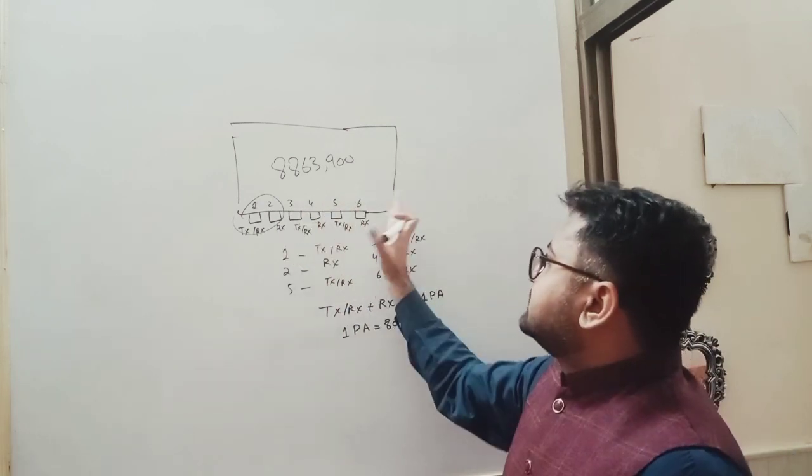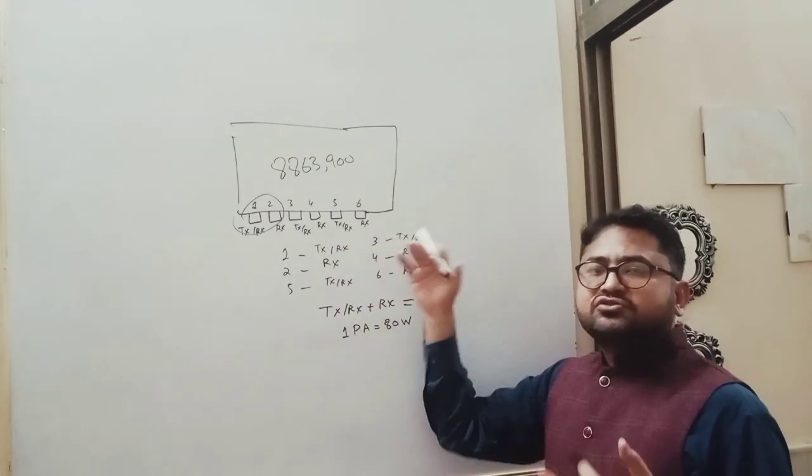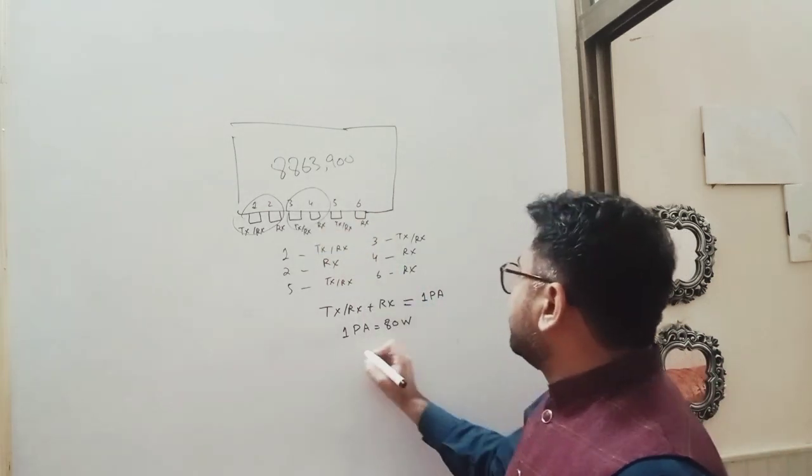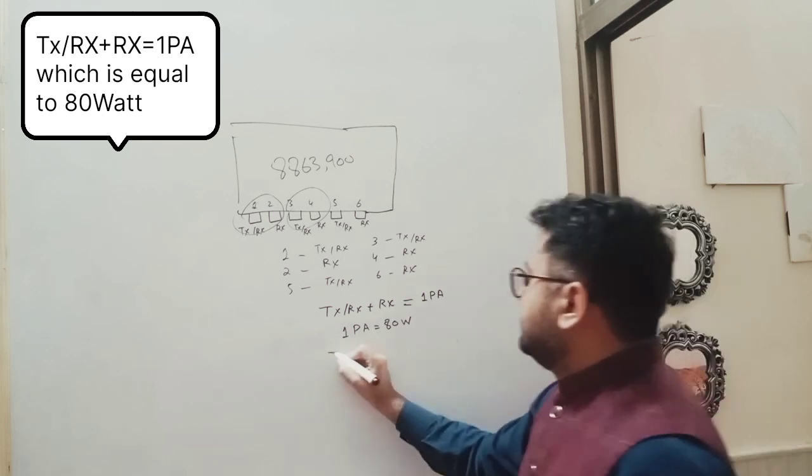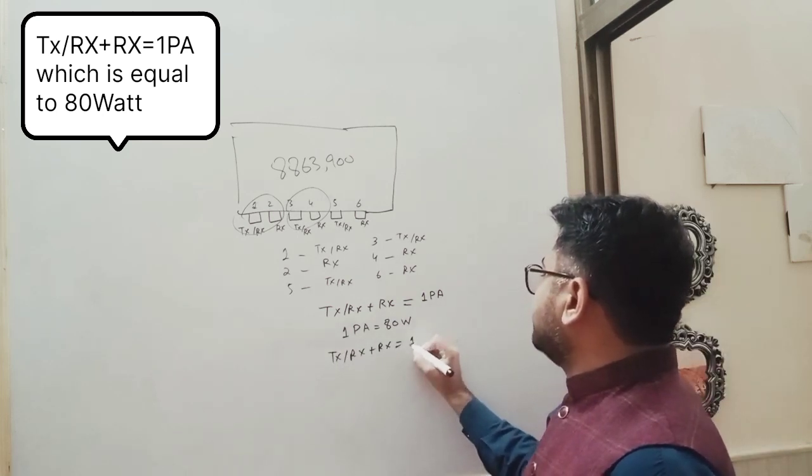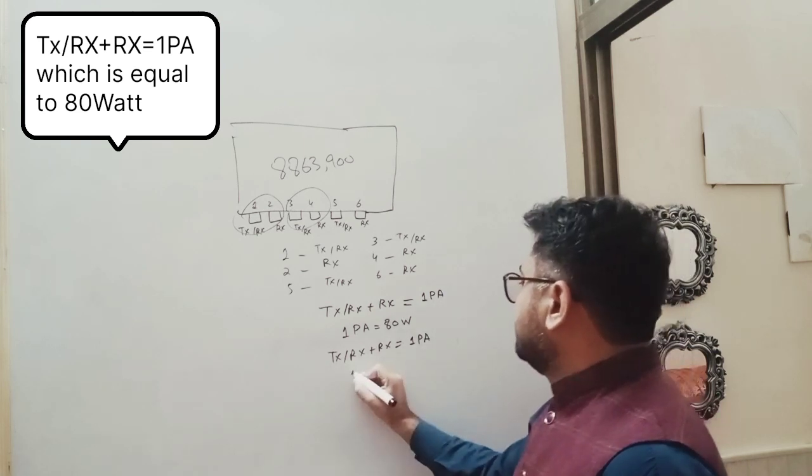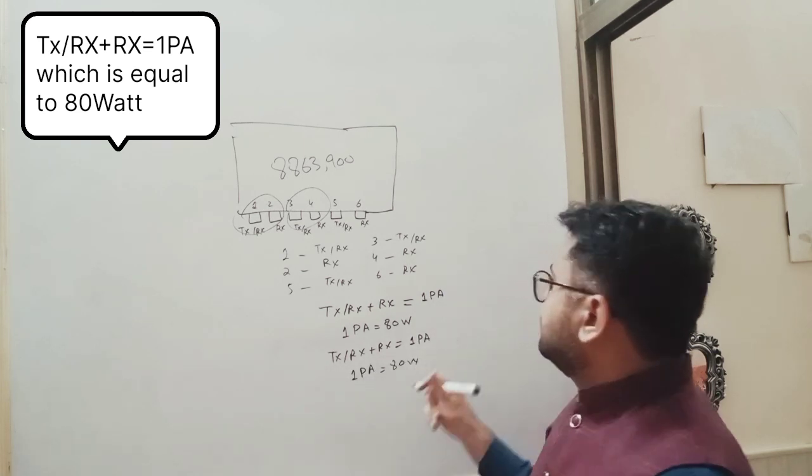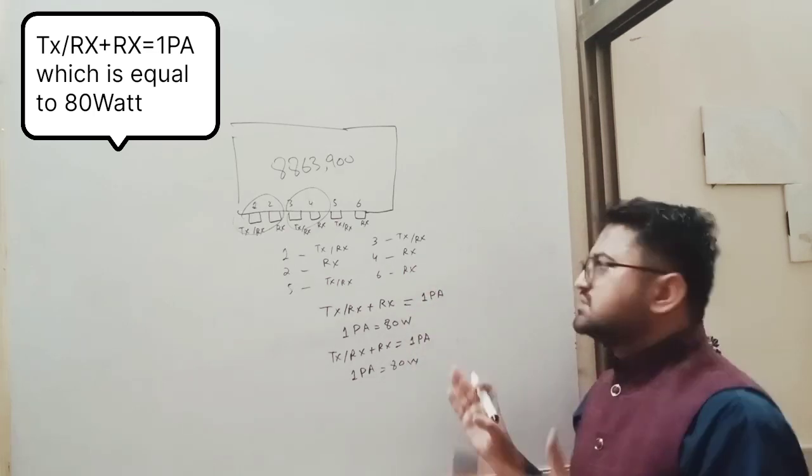Ports 3 and 4, and 5 and 6. Ports 3 and 4 are used for the second sector. They will be the same as TX-RX plus RX. This is also 1 PA. If we have 2 PA, so 80 plus 80 is 160 Watt.